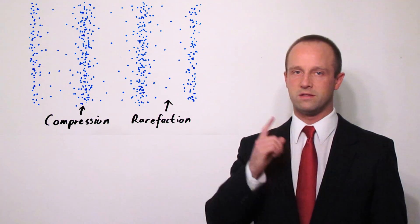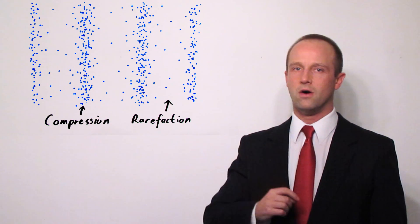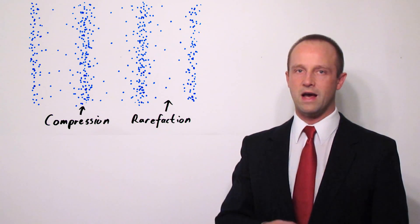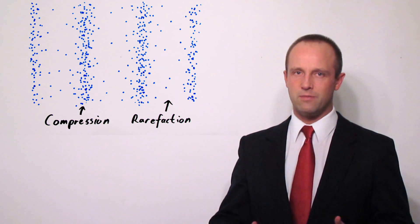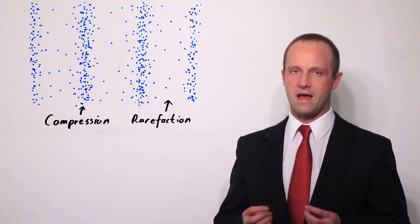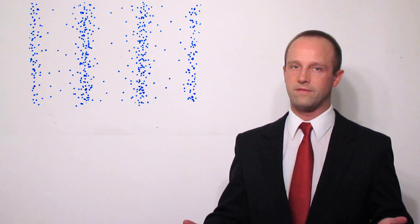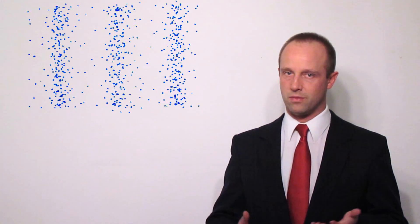Now the distance between two parts, two points of compression or two points of rarefaction again is a wavelength. The amplitude this time relates to how squashed the air is and it's still going to have a velocity. We often talk about the speed of sound. Well normally in air that's around about 300 meters per second.